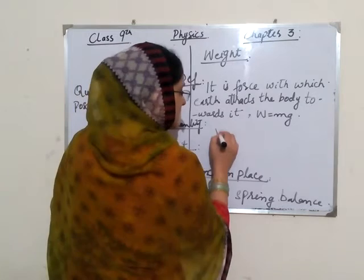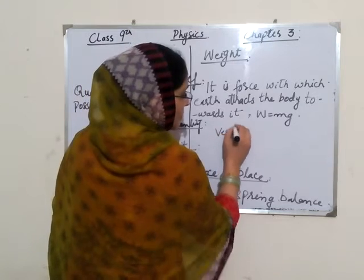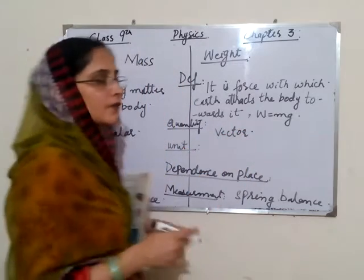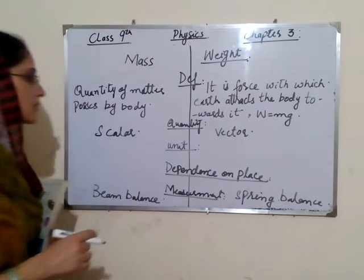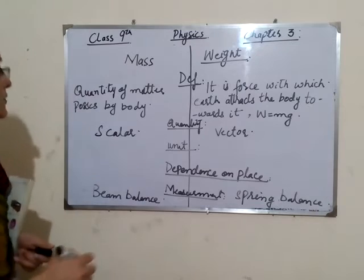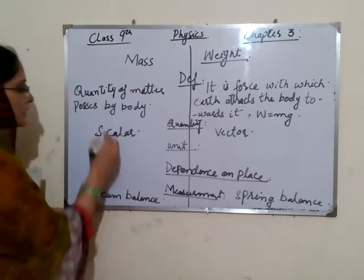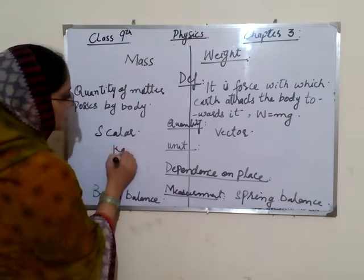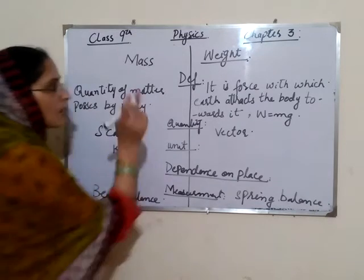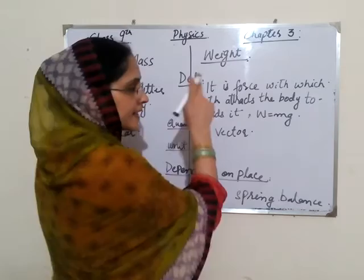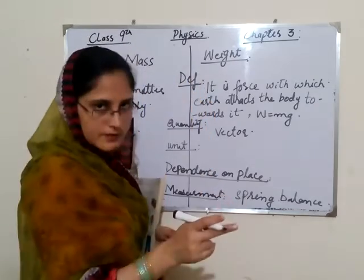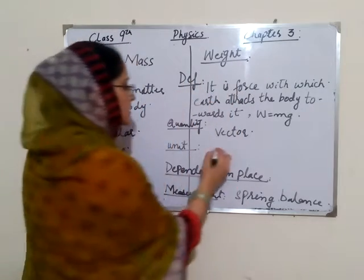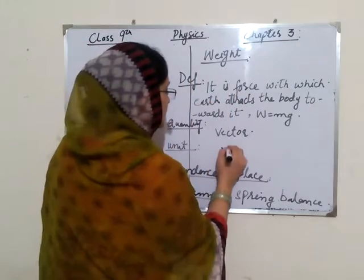Mass is a scalar quantity. Weight is a vector quantity because it is a force, and force is always a vector. The unit of mass is kilograms (kg), and because weight is a force, its unit depends on the force unit.